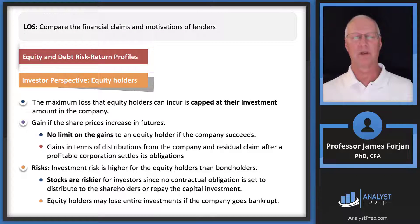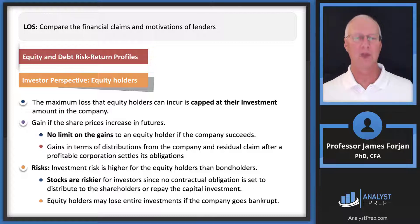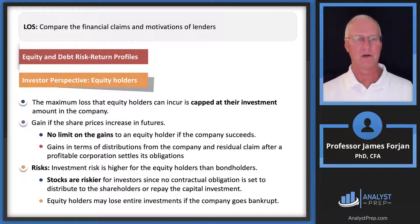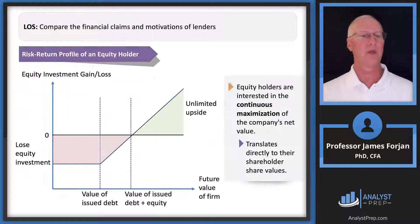Equity holders are capped at their investment level on the downside — limited liability — but there's no limit on the gains; there's tons of upside. You can buy Microsoft at $10 a share and potentially sell for much more, with stock splits along the way. Investment risk is higher for equity holders than for bondholders — stocks are riskier.